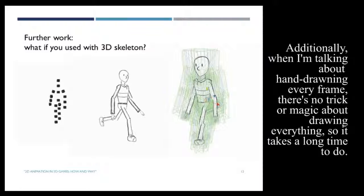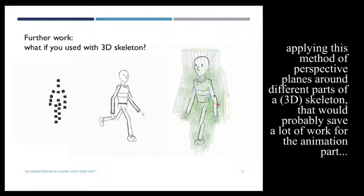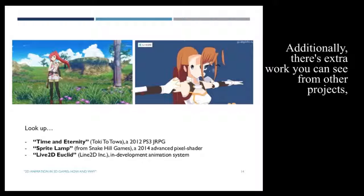Additionally, when I'm talking about hand drawing every frame, there's no trick or magic about hand drawing everything, so it takes a lot of time to do. And I haven't done this too much yet, other than what you see here. But one other way to go is maybe applying this method of perspective planes around different parts of a skeleton. And that would probably save a lot of work for the animation part.